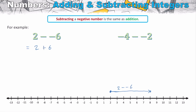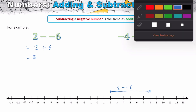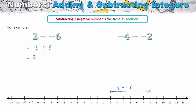Rather than thinking about subtracting a negative, change the problem to addition — because that's what we've essentially done, we've moved to the right. So two minus negative six becomes two plus six, which is eight. Similarly, starting at negative four and subtracting negative two — taking away our fee — we move to the right again. Change it to addition: negative four plus two moves us to the right, leaving us at negative two.